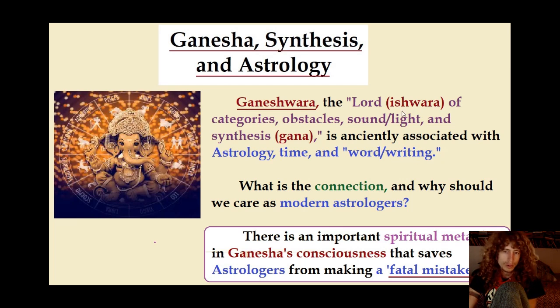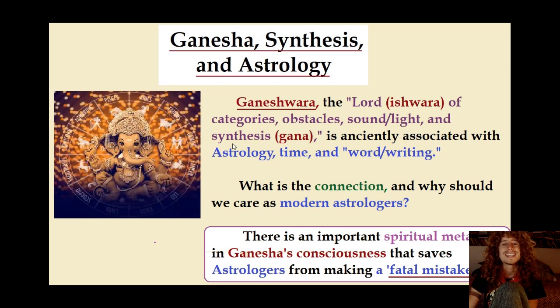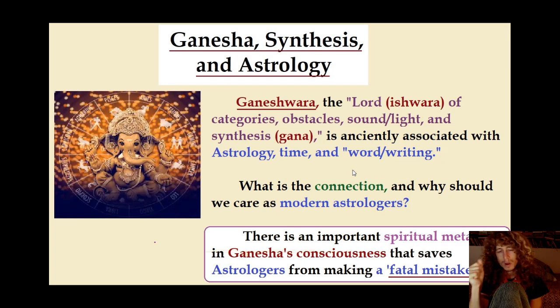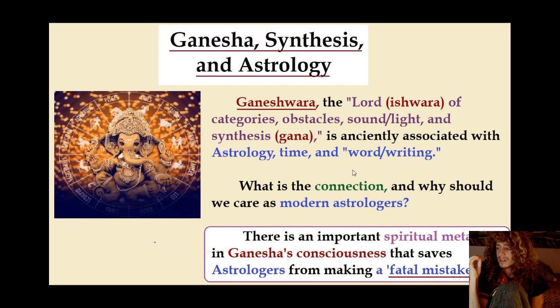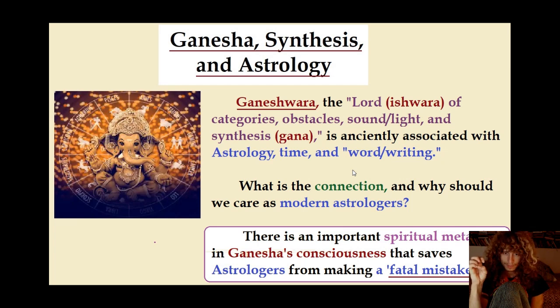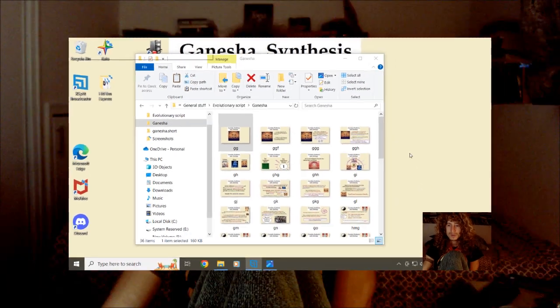Ganesha, the lord — Ishwara — the lord of categories, obstacles, sound and light, and synthesis. It's the synthesis of ga and na. Ganesha is anciently associated with astrology, time, and the word, writing. Ganesha is India's Buddha. Ganesha is India's Hermes Trismegistus, or Thoth. And there's a connection of these figures to Mercury, as I explained in our last video.